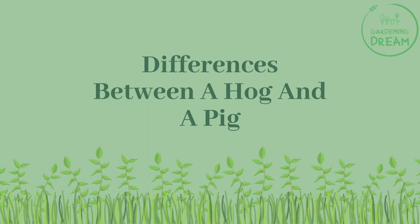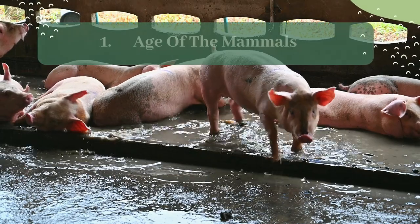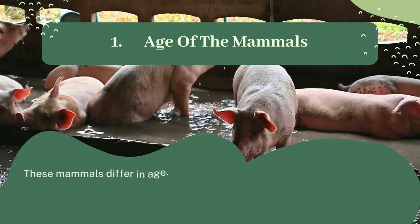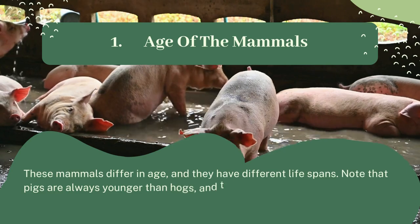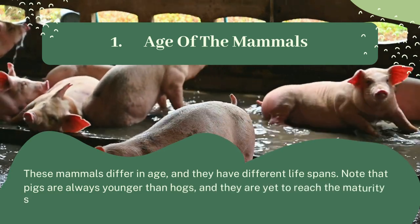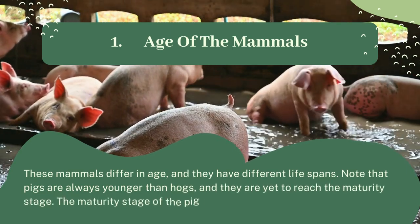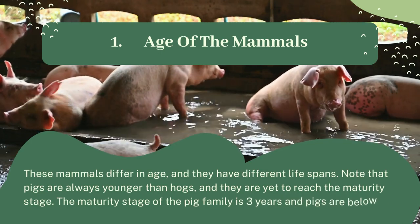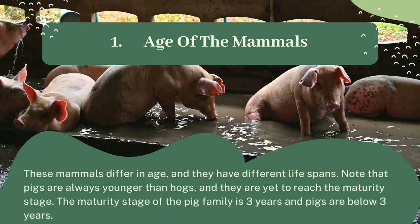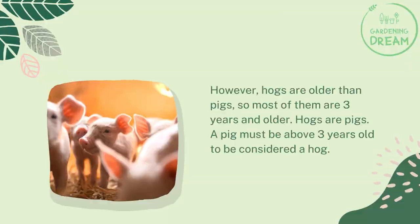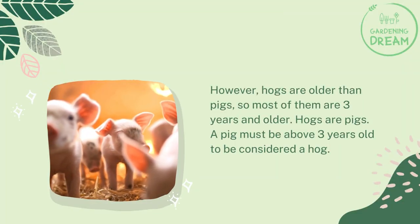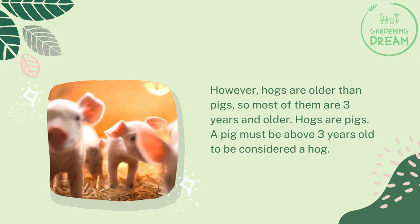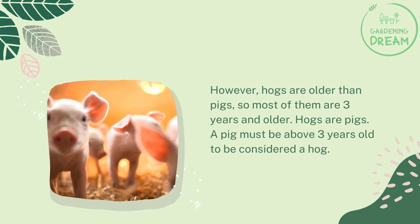One key difference between a hog and a pig is age. These mammals differ in age and have different life spans. Pigs are always younger than hogs and have yet to reach maturity. The maturity stage of the pig family is three years — pigs are below three years old, while hogs are three years and older. A pig must be above three years old to be considered a hog.